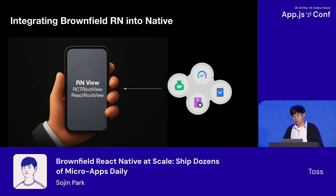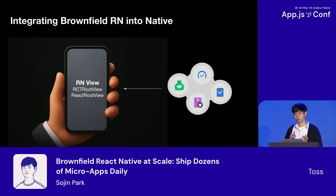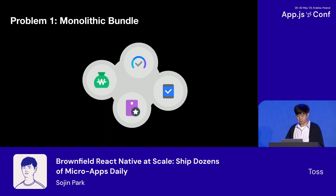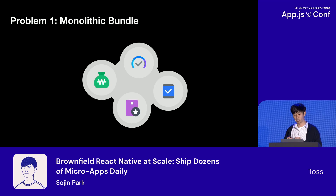Now, integrating React Native into native apps basically isn't inherently that difficult. You just define a React Native view, connect it into an activity or a view controller, and load a JavaScript bundle — it's basically simple. But the real problem emerges at scale. Traditional React Native puts all the services and screens into one giant bundle — what I'll call a monolithic bundle.